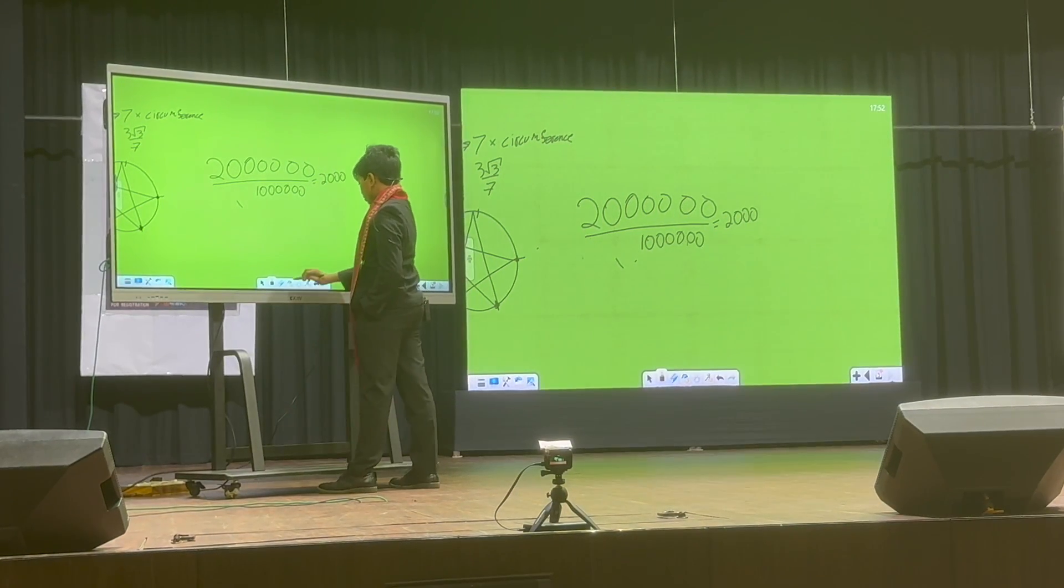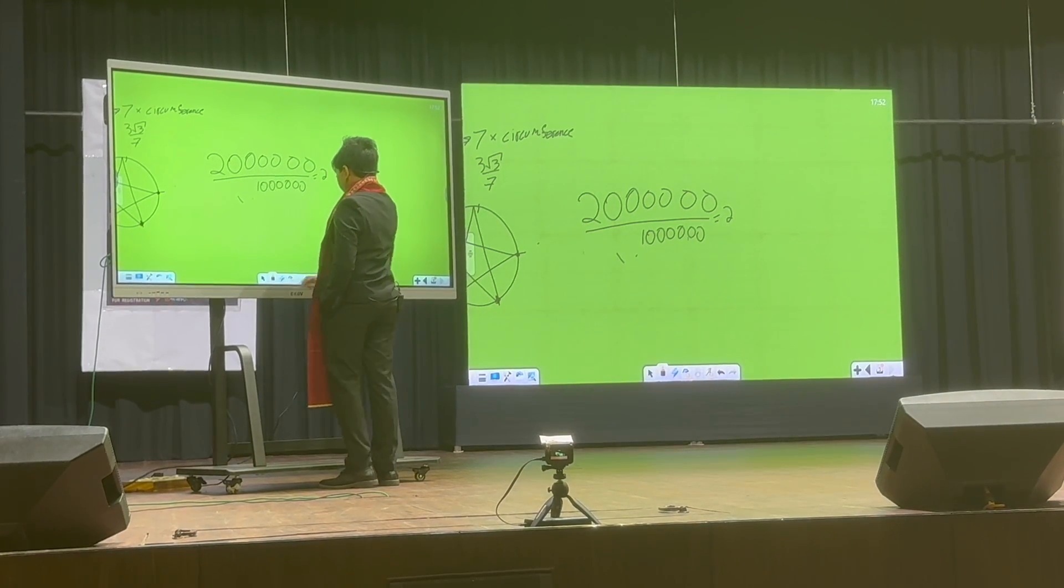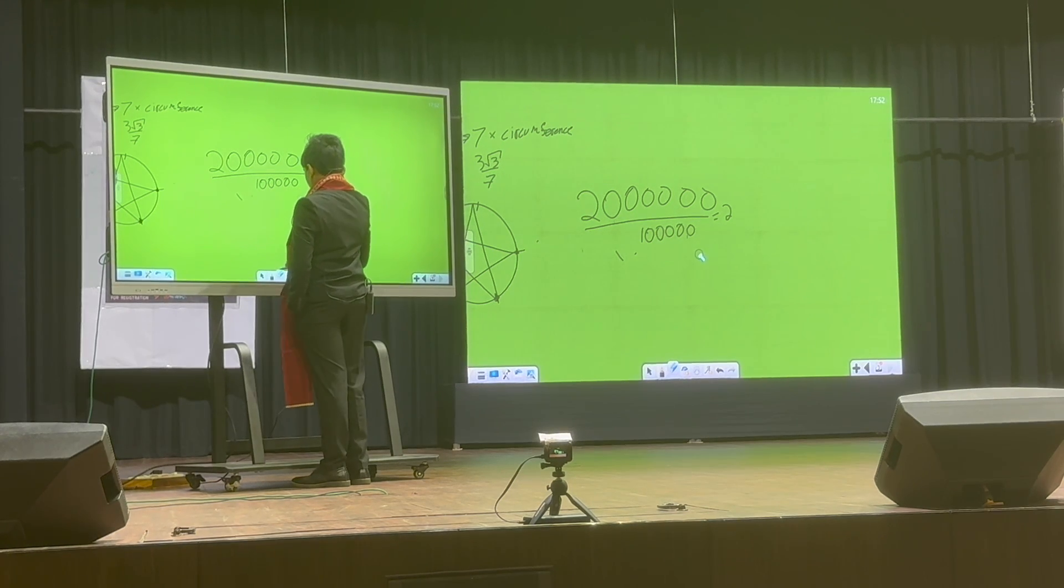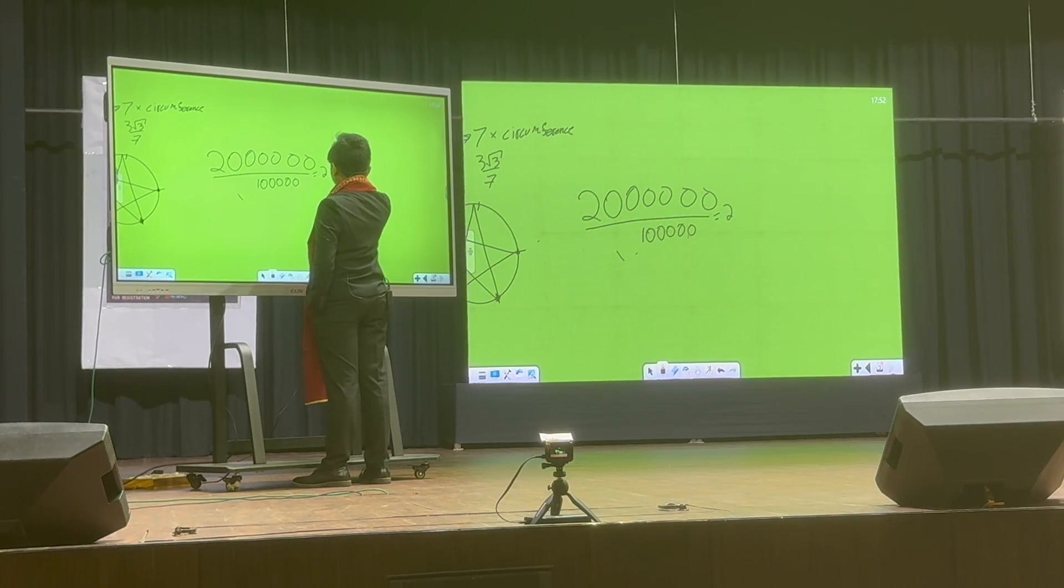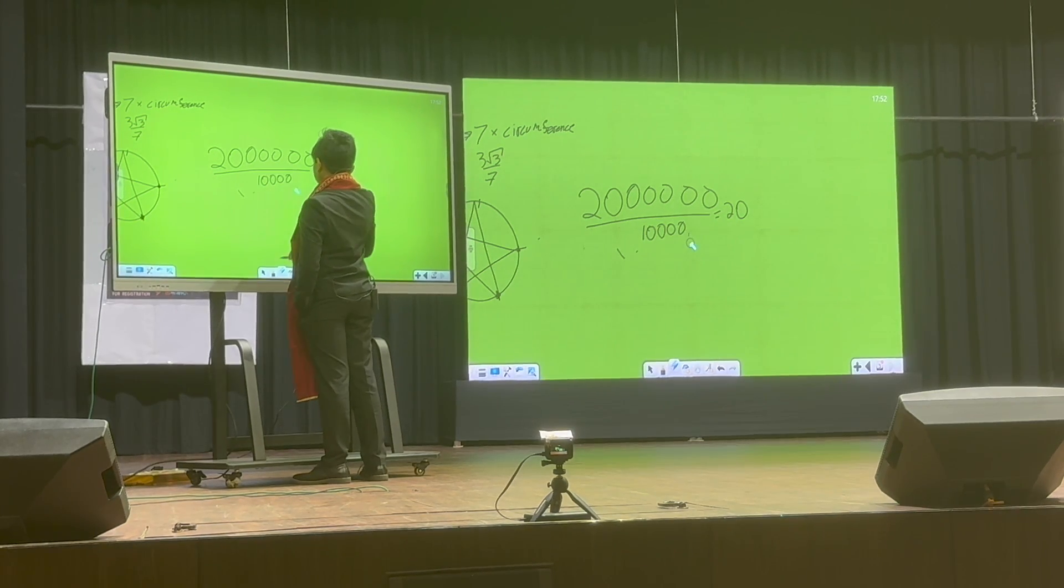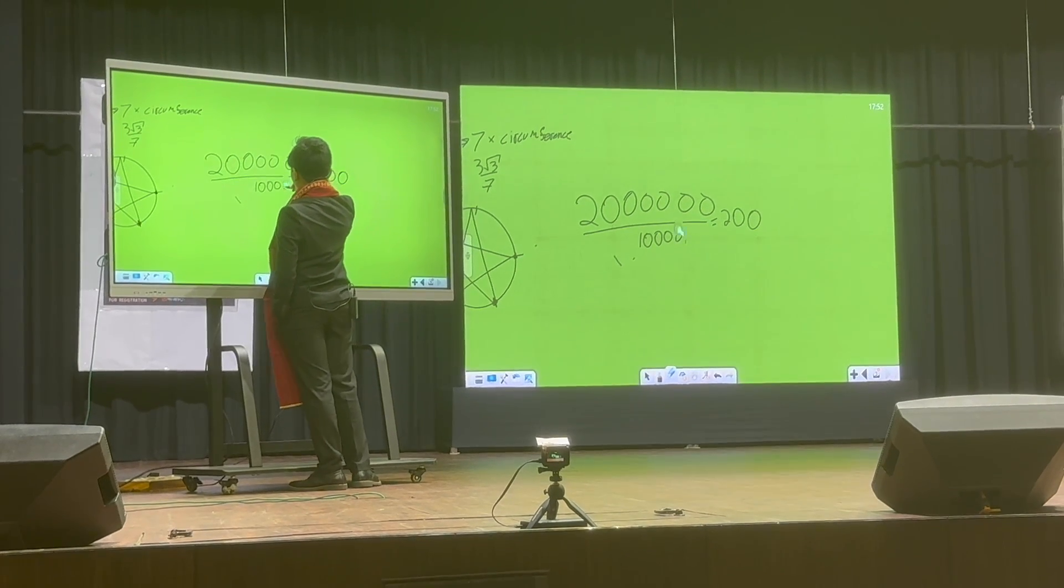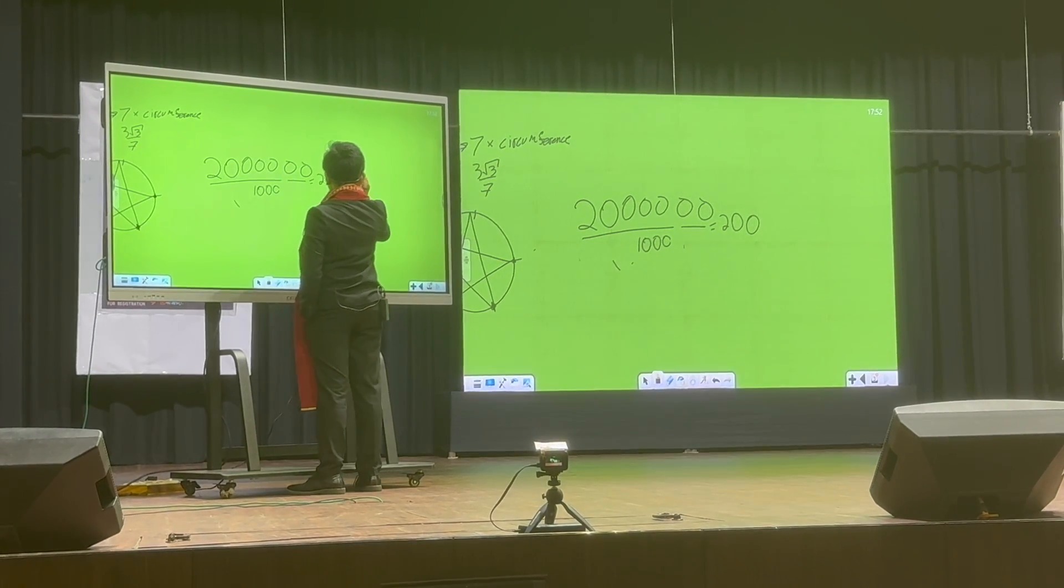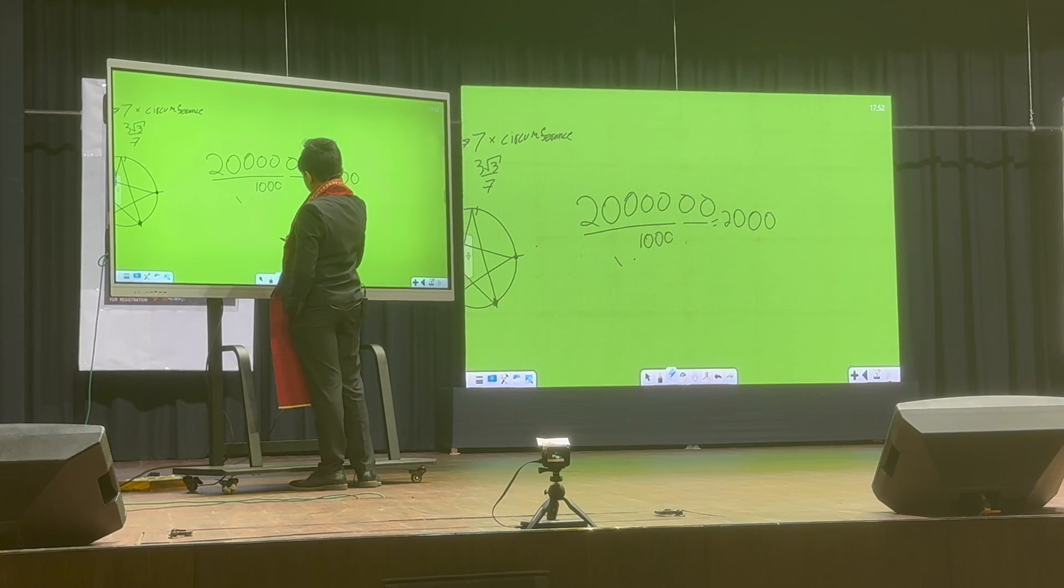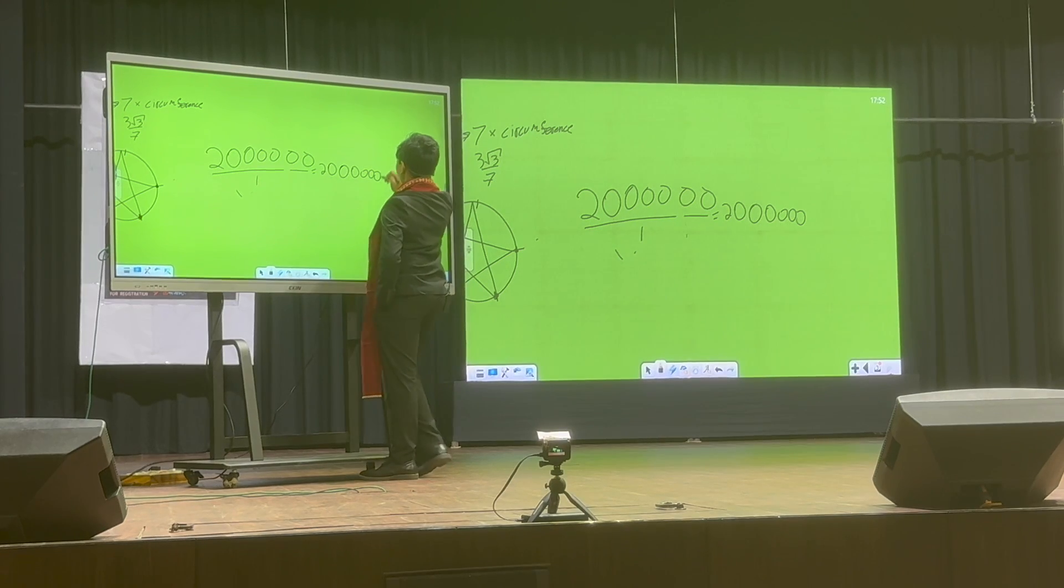But if we divide this by 100,000, then we will get 20. If we divide this by 10,000, we will get 200. If we divide this by 1,000, we will get 2,000, and so on. So as we get smaller and smaller, once we get to one we will get